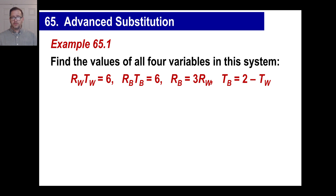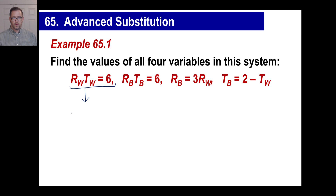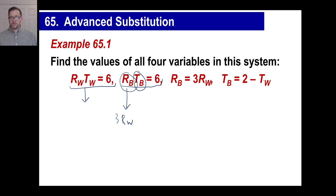We're going to do exactly the same thing we did in the last slide — just substitute. All you need to do is pick something and get started. For example, I have R sub B over here and there's the rate of the bicycle — that's 3 times R sub W. So the rate of the bicycle is 3 times the rate of the wagon. Then time of the bicycle equals 2 minus T sub W, so let's put that in.